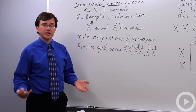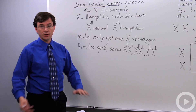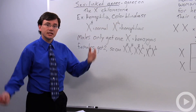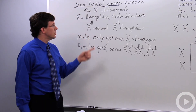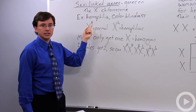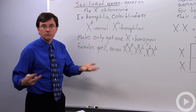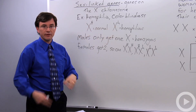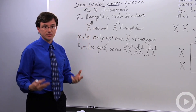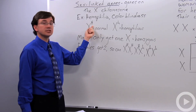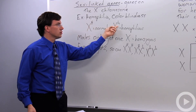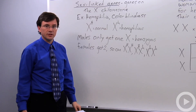Some common examples of sex-linked traits used during tests or in class are hemophilia and colorblindness. Because they're on the X chromosome, when you write them, instead of putting just the letter — big H for normal blood clotting and little h for hemophilia — you put the X to represent the X chromosome, and typically as a superscript, you put the capital H for normal or the lowercase version for hemophilia.